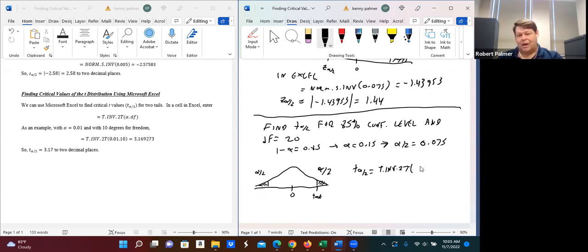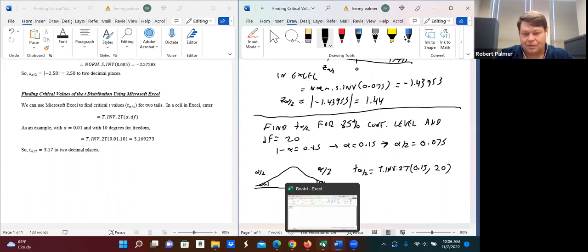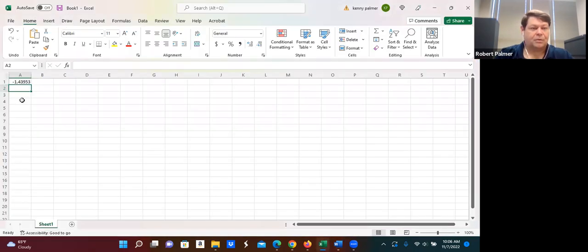So alpha, which is alpha over 2. In this case, actually, I take it back. We don't actually need alpha over 2. We just need alpha. And so we just put in alpha, which is 0.15. So we actually need alpha over 2 for the z. To be clear here, we need alpha. And then our degrees of freedom, which is going to be 20. And if we do that, let's go back to Excel.